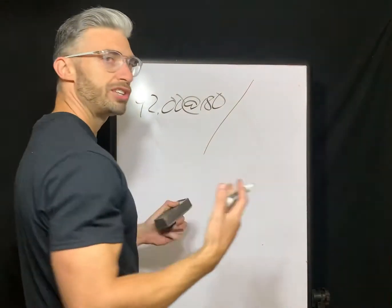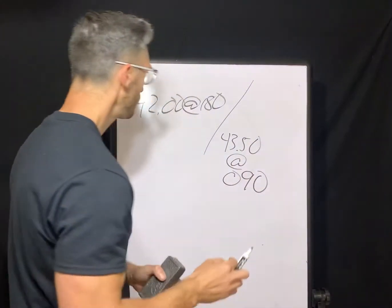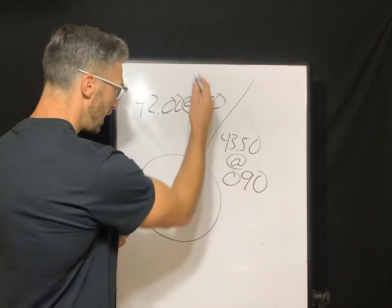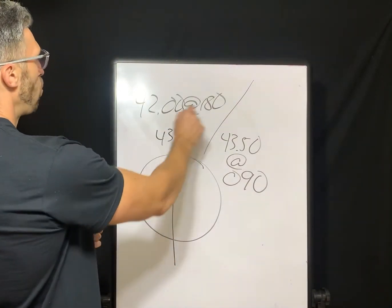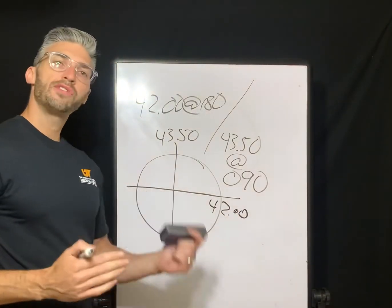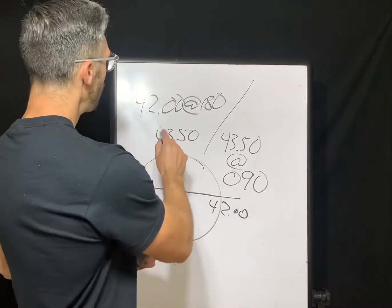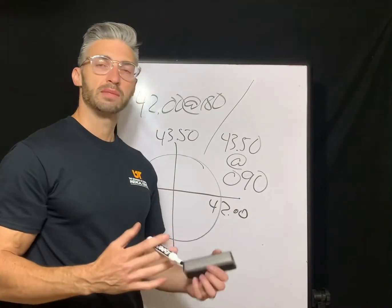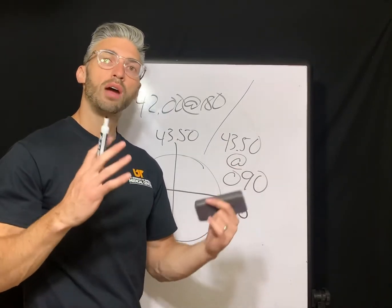Let me give you an example. Say our K readings are 42 at 180 and 43.50 at 90. Across our vertical meridian — our 90 — the power of the cornea is 43.50 diopters. At our 180, it's 42 diopters. The difference between those two, our steepest and our flattest meridian, is going to be our corneal astigmatism. So 43.50 minus 42 is one and a half diopters of corneal astigmatism — that's the amount of toricity, the cylinder value ascribed to the cornea.